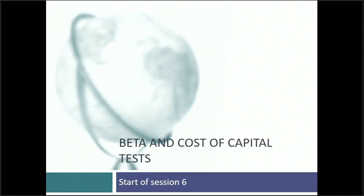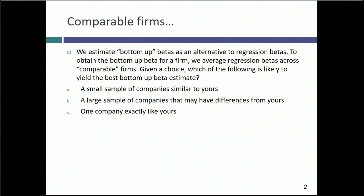I'm going to start today's class with questions about betas, cost of debt, cost of capital, all of which you've seen in some form in a previous class. One of the things I'm going to talk about today is what's called bottom-up betas. Sounds fancy, but you estimate the beta for a company by finding other companies like it, looking up their betas, and averaging them out. I'll argue that's a much better way than running one regression on a company and taking the slope of the line.